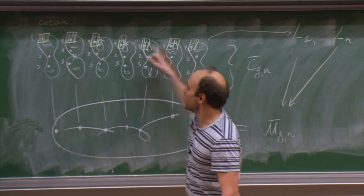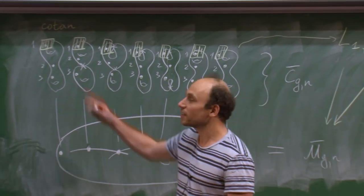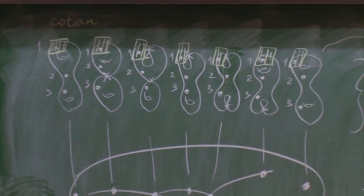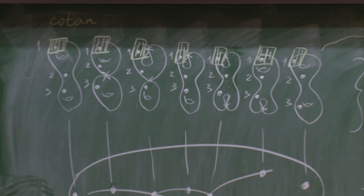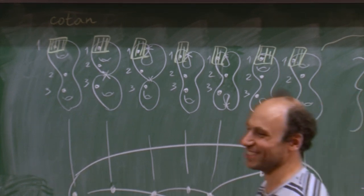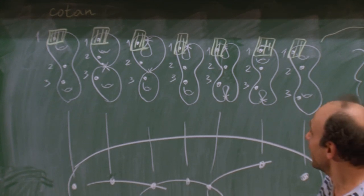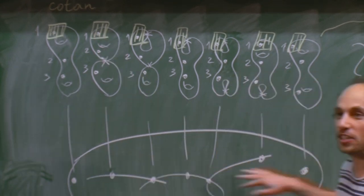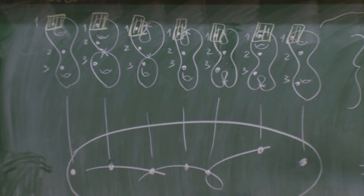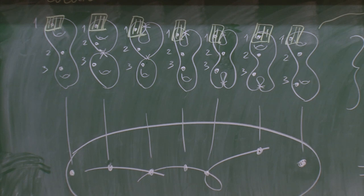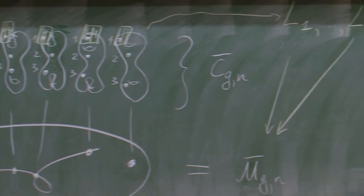On every curve you have n marked points, and you can take the cotangent line to the first marked point. This is the cotangent line to the first marked point on each fiber of the universal curve. You have a complex line over each point of the moduli space, so altogether they form a line bundle called L₁. Similarly you can define L₂ up to Lₙ. These n line bundles have first Chern classes called the psi classes. So ψᵢ is the first Chern class of Lᵢ, in the cohomology of M̄_{g,n}.